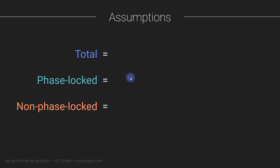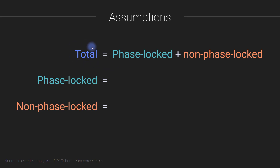So with that as a brief reminder, here are our assumptions. We assume that the total signal — that is, all of the signal — is either phase-locked or non-phase-locked; there's nothing else. Everything is phase-locked or it's non-phase-locked. Therefore we add both together to get the total signal. We also assume that this is additive — we don't assume any kind of non-linear interactions between phase-locked and non-phase-locked components.